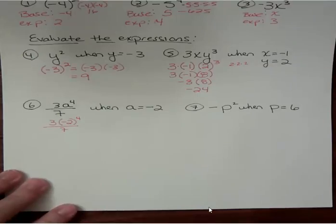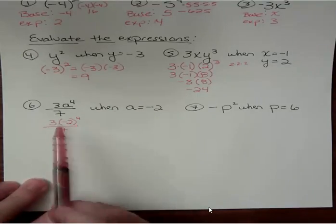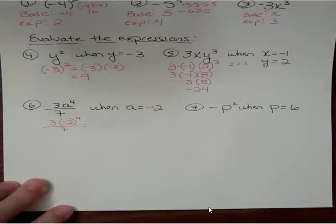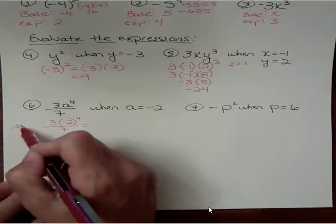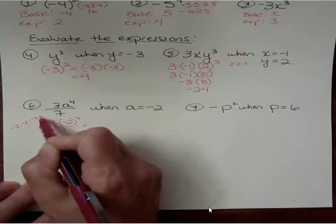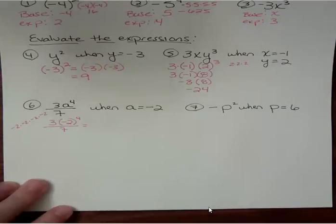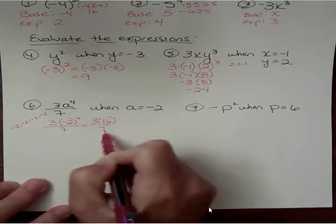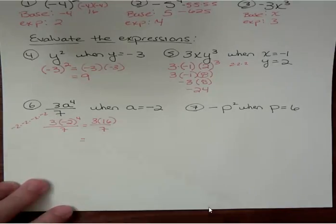We're going to simplify the numerator first, and in the numerator we have an exponent, and we have multiply. Negative 2 to the fourth power is negative 2 times negative 2 times negative 2 times negative 2, and that's 4 negatives. That's an even number, so it's going to be positive 16. And now we're going to do 3 times 16, which is 48.